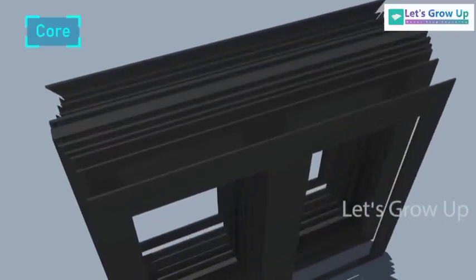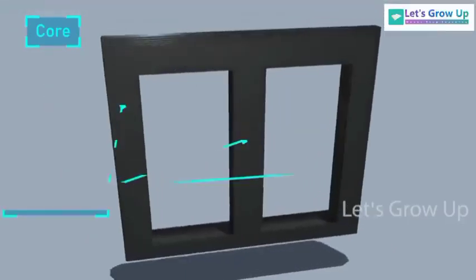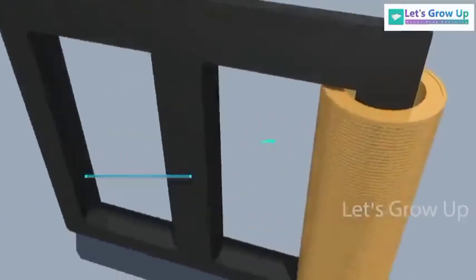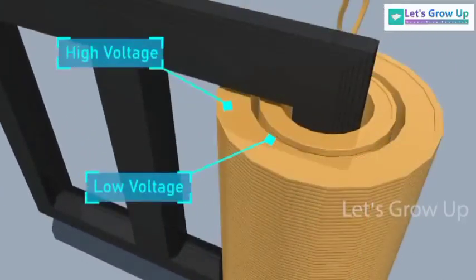The core of the three-phase transformer consists of three limbs in the same plane, and each limb carries both low voltage LV winding and high voltage HV winding. The core provides a magnetic path flux around the core.